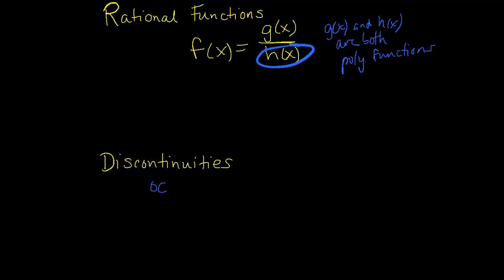Discontinuities occur when h of x is zero. Or in other words, the denominator of the rational function is zero. And a discontinuity is really a gap in the domain. So if there's a value that you want to evaluate, and you actually get something that's undefined, well that means that you have a gap in your domain at that value. So let's take a look at some examples of discontinuities.